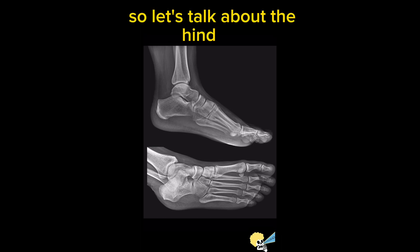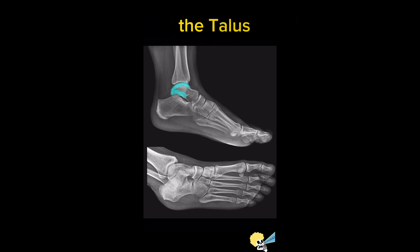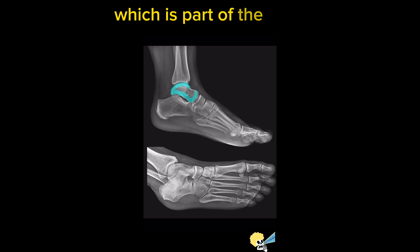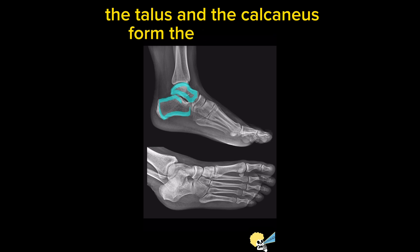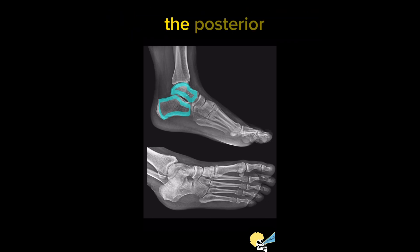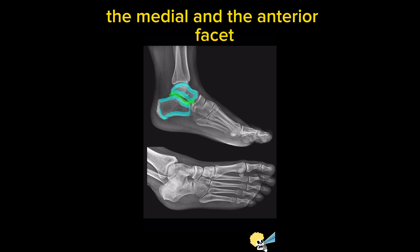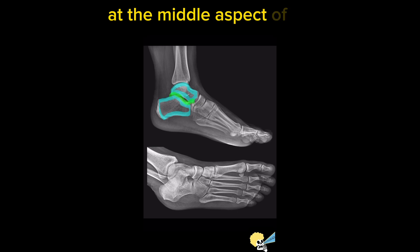The hind foot is composed of two bones: the talus, which is part of the ankle joint, and the calcaneus. The talus and the calcaneus form the subtalar joint. The subtalar joint has three facets: the posterior, the medial, and the anterior facet.